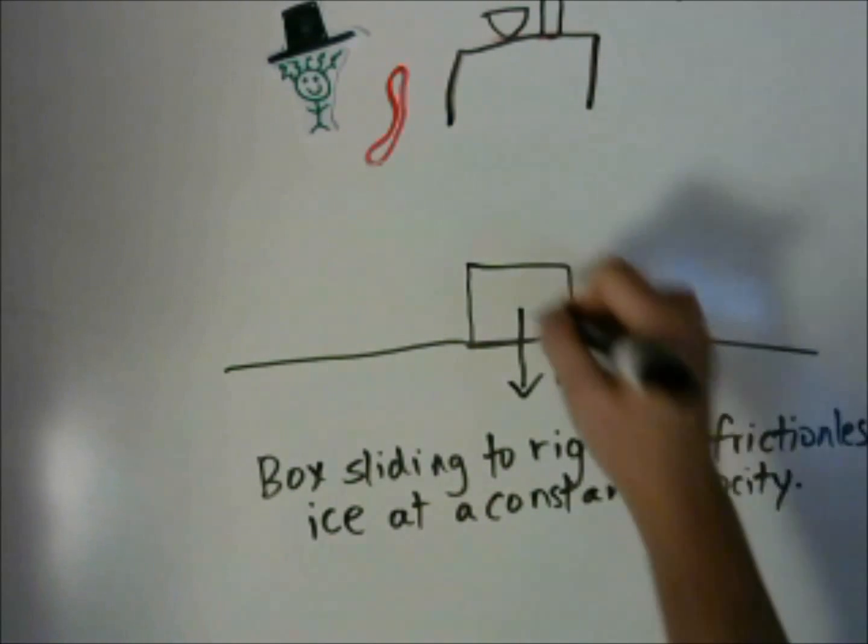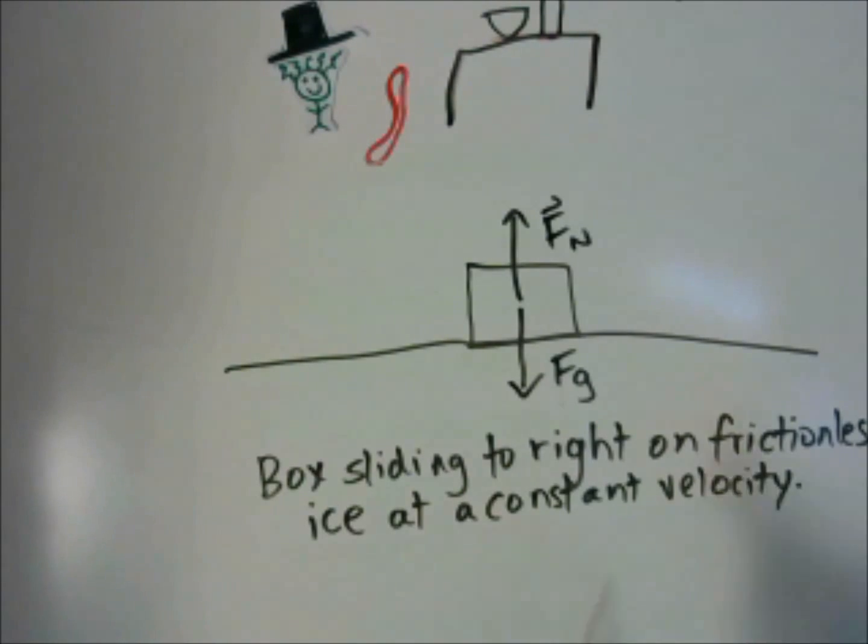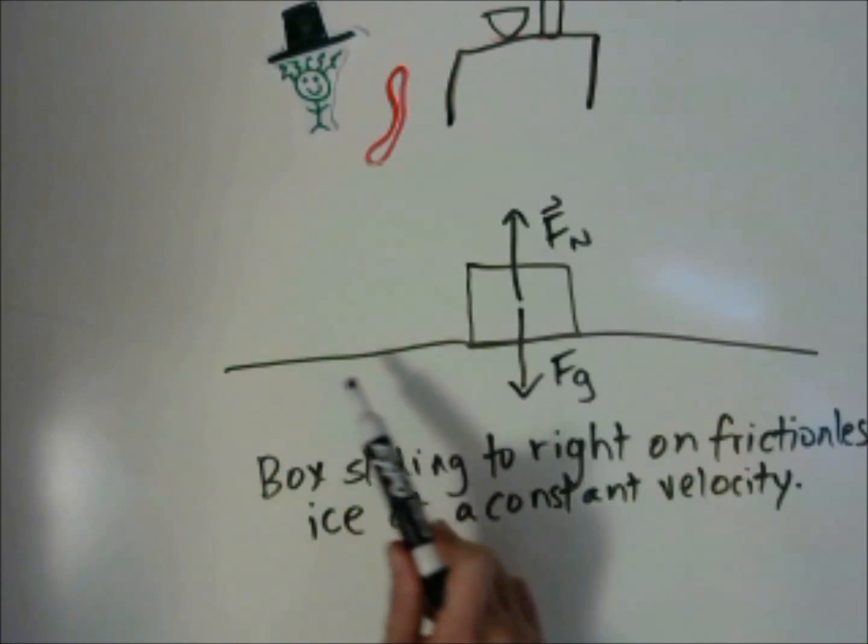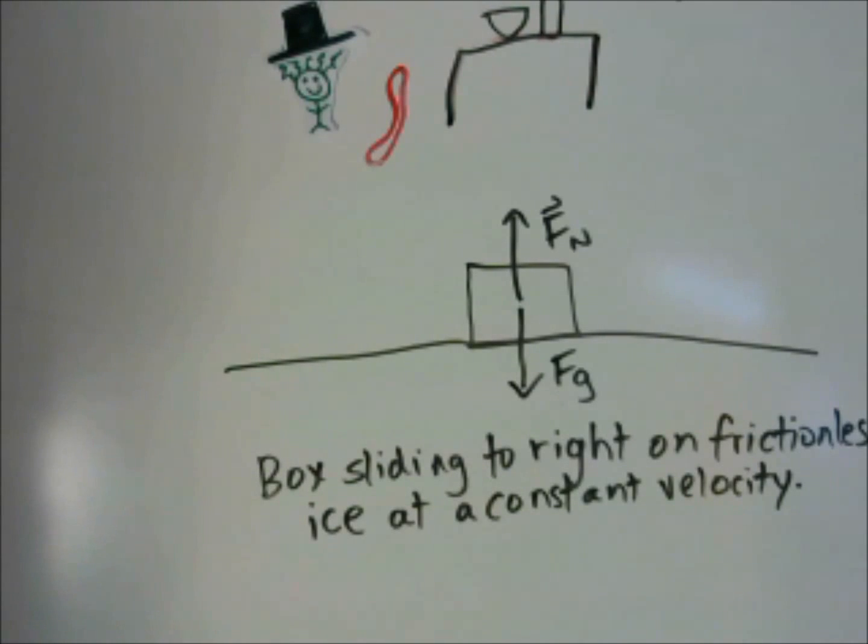And you might want to say that there's a force going to the right. But is there anything right now pushing on the object? Remember that a force is an interaction between two objects. It's moving at a constant velocity, and there's nothing pushing it right now. So these are the forces acting on the box. This is a case where the net force is zero, the acceleration is zero, and the object is moving.